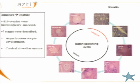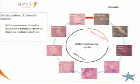After histological analysis of 819 ovaries, we could describe seven different stages of maturation. We observed that yellowfin tuna has an asynchronous oocyte development, with different stages in the ovary but without a dominant population. For classification, we estimated that cortical alveoli was the stage when a fish becomes mature. Furthermore, we observed that after spawning, a fish enters a resting stage and returns to a primary growth stage condition.